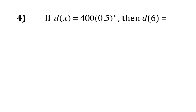Number 4, d(6) is equal to 400 times 0.5 to the sixth power. You might recognize this as exponential decay. So this is something where it's half-life. So you start at 400 and go down to 200 and then 100 and then 50. So you could almost do this, a lot of it, without a calculator if you knew some of your numbers. So the answer that you're going to get is 6.25.